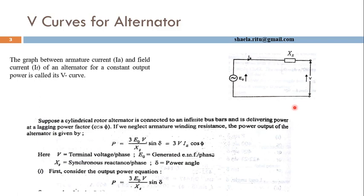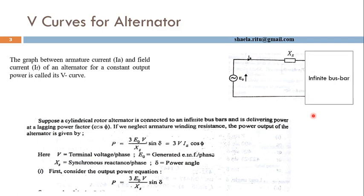Here, we are neglecting the armature winding resistance of the alternator. The alternator is connected in parallel with an infinite bus and is delivering power at a lagging power factor. Since it is connected to an infinite bus, the terminal voltage and frequency are fixed — these are constant values. The alternator has two inputs: mechanical input provided through the prime mover, and field excitation.